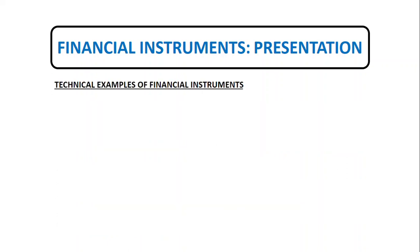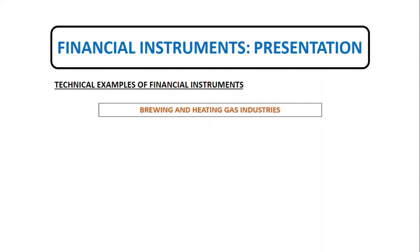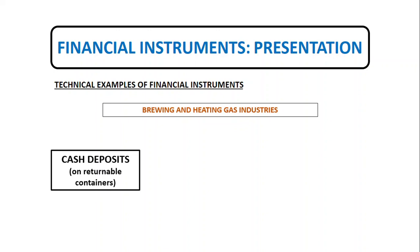For the technical example of financial instruments, in some industries like brewery and heating gas industries, entities distribute their products in returnable containers. These entities collect cash deposits for each container delivered, with an obligation to refund on return of the container. Such an arrangement represents a contract to exchange a non-financial item, which is the container, for cash, and is therefore outside the scope of IAS 32 and IFRS 9.